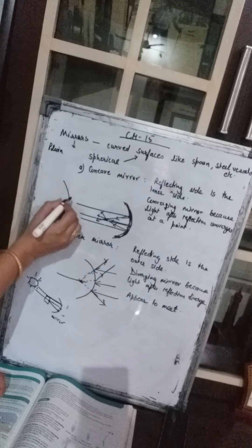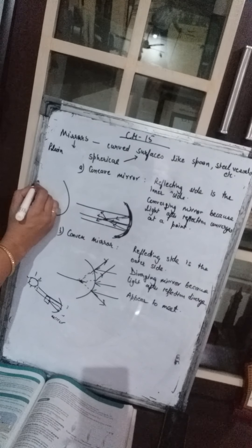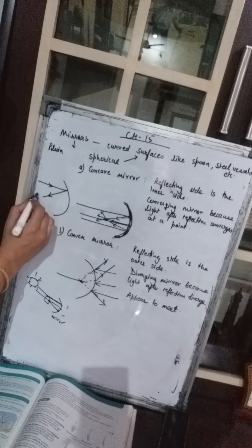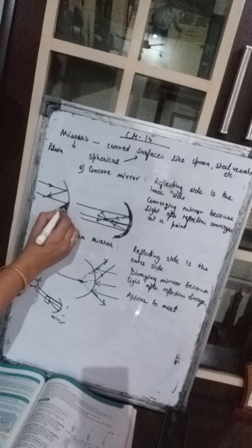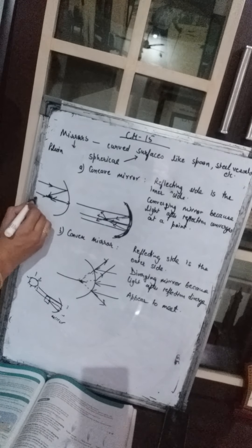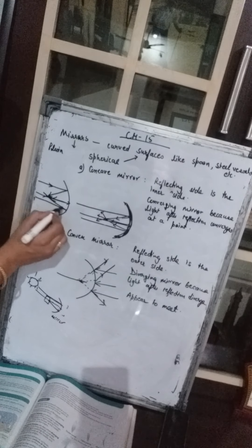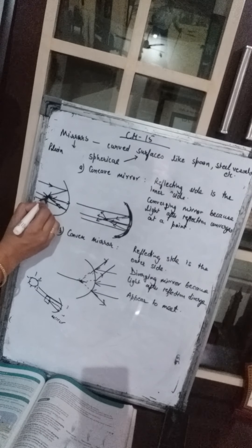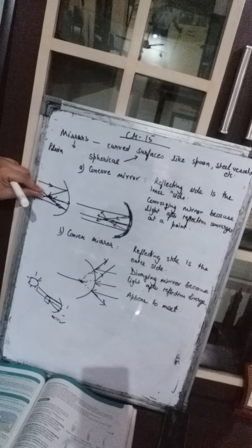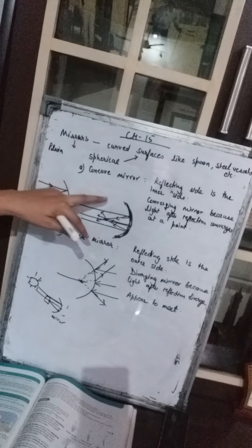In a concave mirror, the light falls here and gets bounced back like this; light comes from different points and goes back, and all the rays meet at a point. After reflection, the rays of light converge at a point — that's why it is called a converging mirror.